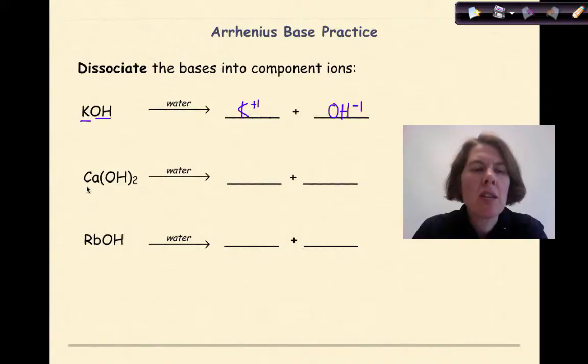Ca(OH)2. Ca is coming from group 2, so my positive ion would be Ca plus 2, and then I have two hydroxide ions. So this would be 2 OH-1 to keep it electrically neutral.